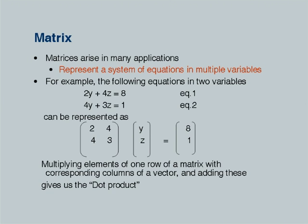Multiplying elements of one row of a matrix with corresponding columns of a vector and adding gives us the dot product. If you look at the second row, 4 and 3, and multiply it with y and z, you get 4 times y plus 3 times z, which is the left-hand side of that equation, equal to 1 by definition. This is the general matrix representation.